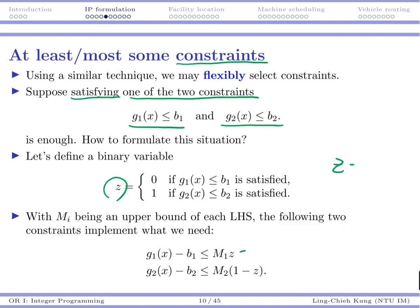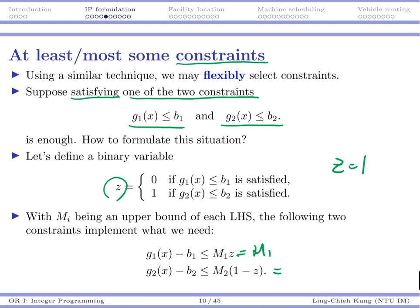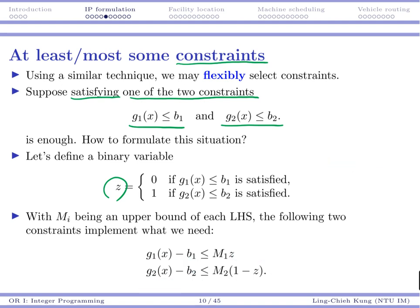When z is 1, constraint 1 is always satisfied regardless of g1, and the right-hand side for constraint 2 becomes zero, requiring g2(x) ≤ b2. Since z must be either 0 or 1, when z is 0 you must satisfy constraint 1, and when z is 1 you must satisfy constraint 2. This requires you to satisfy at least one of the two constraints.